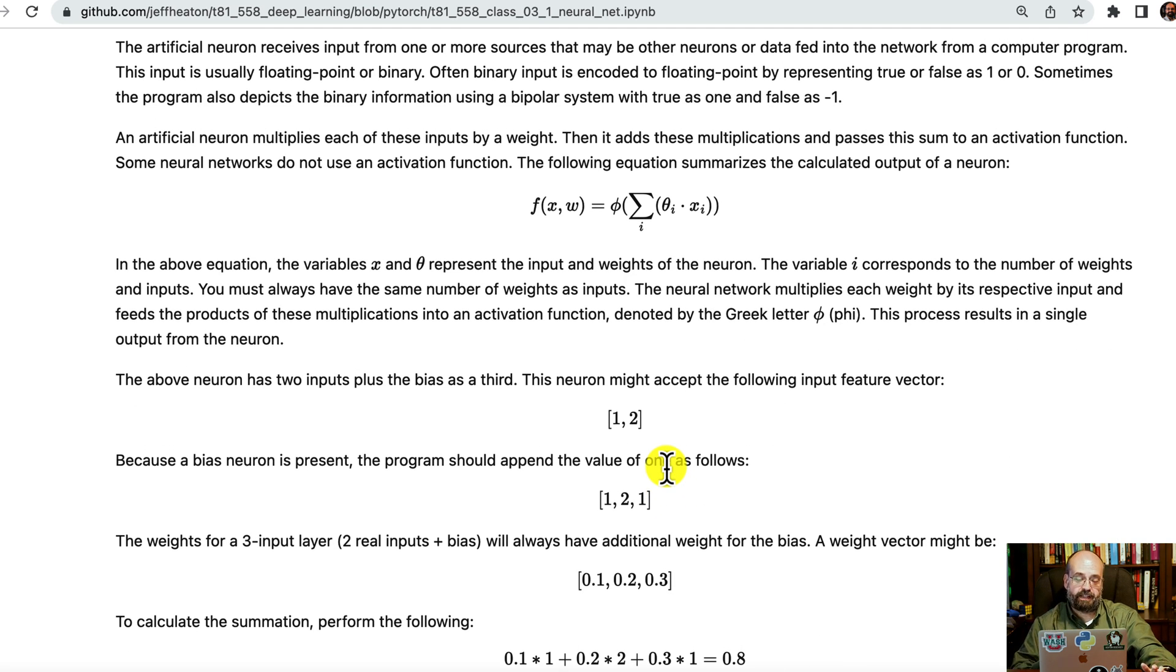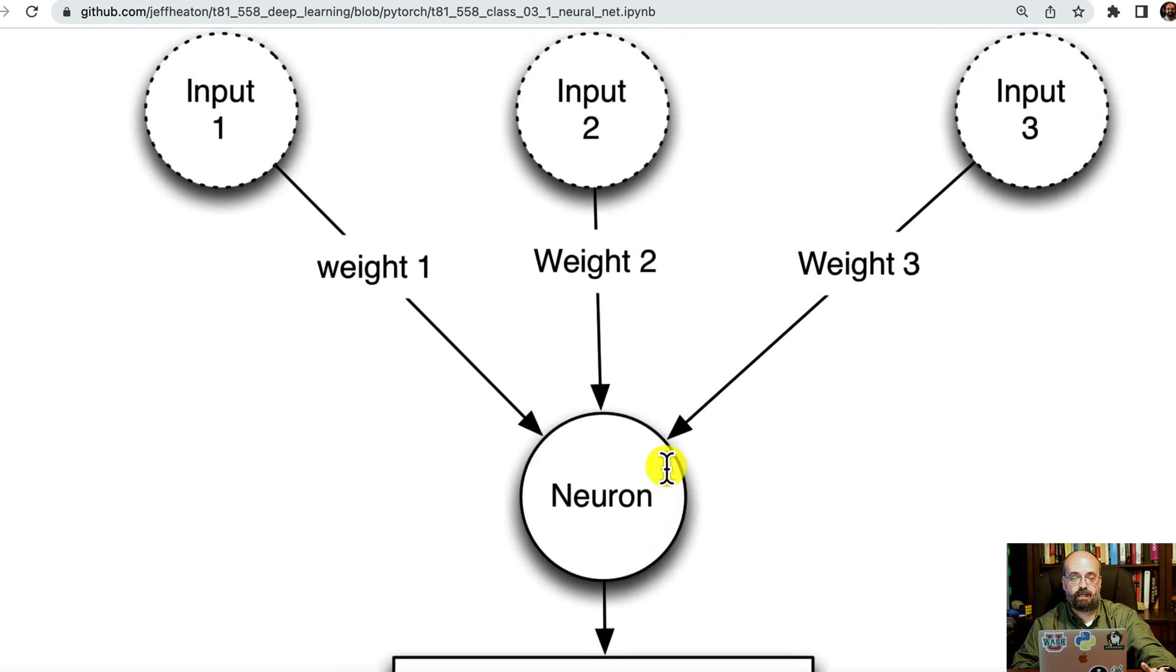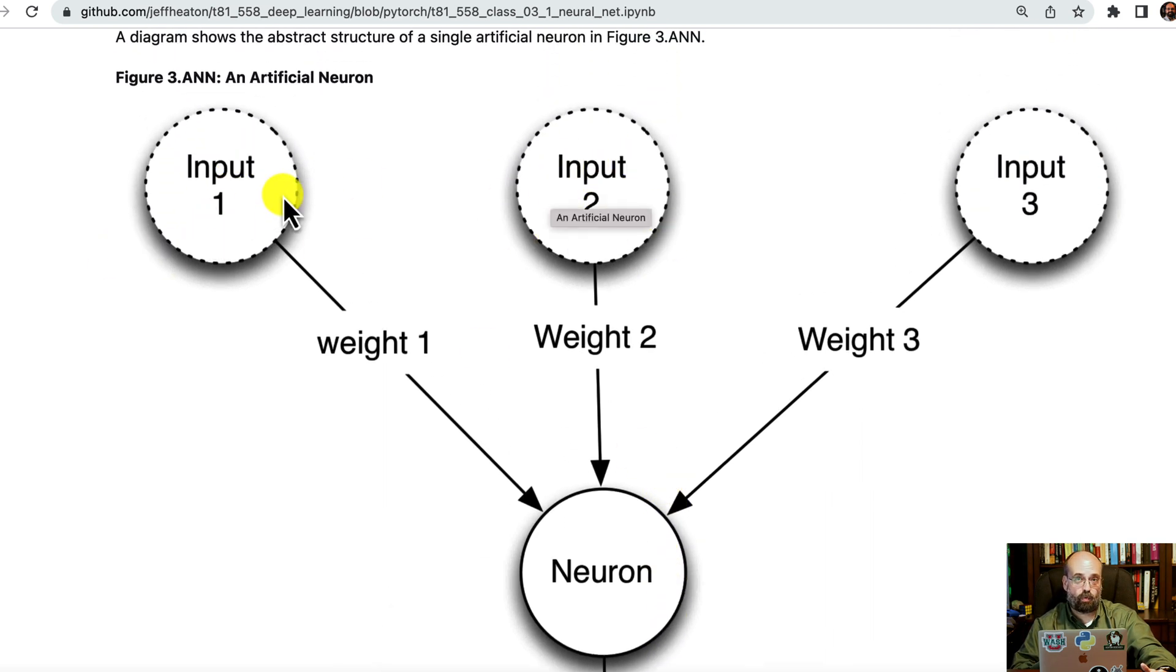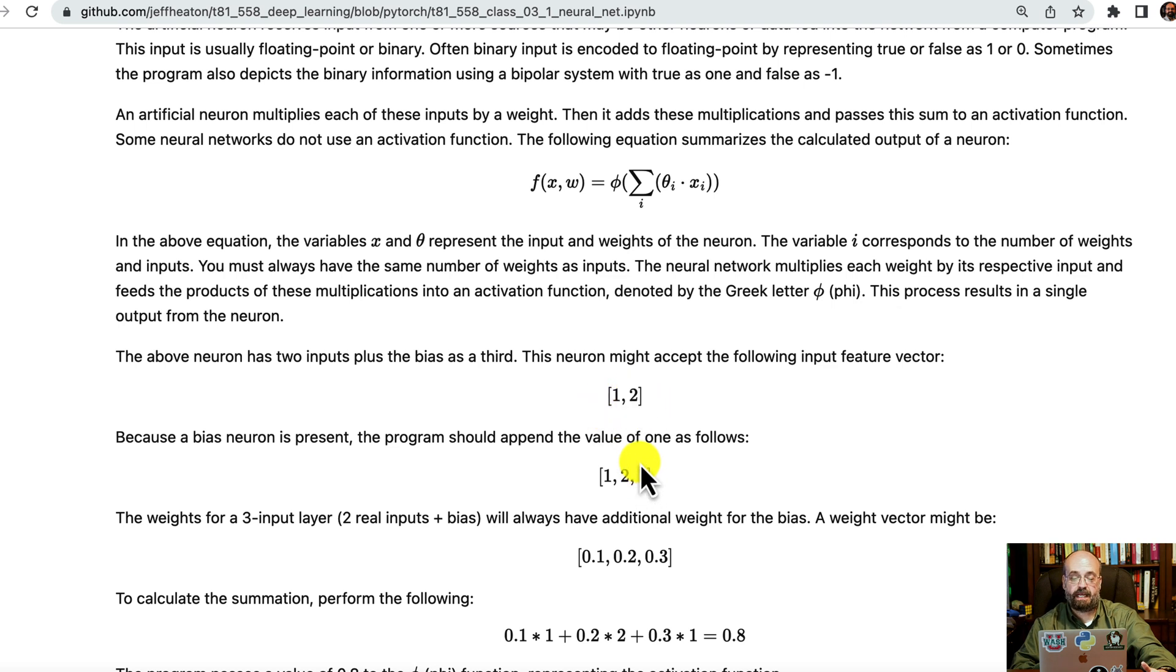It's just slightly more complicated than that. There is a bias connection. It can be thought of just as the other weights. So in this one up here, you could think of maybe input one and input two are the actual inputs that you're passing in. And then input three would always be one, which would cause the weight three to always be simply added to this summation. You can think of the bias neuron as similar to the intercept. Like in slope-intercept form, y equals mx plus k form that you might have seen in algebra.